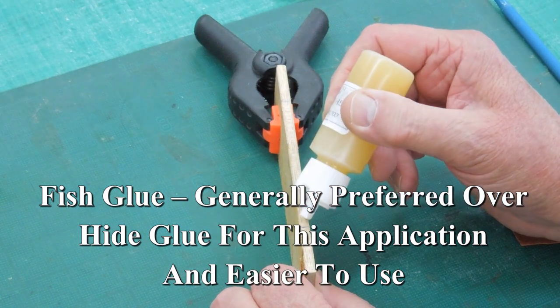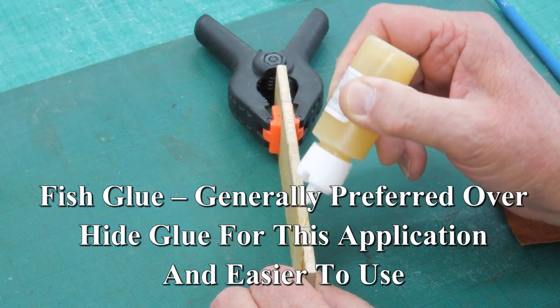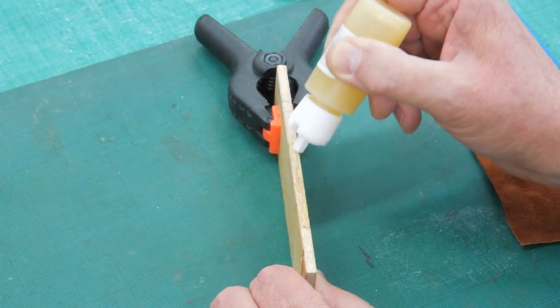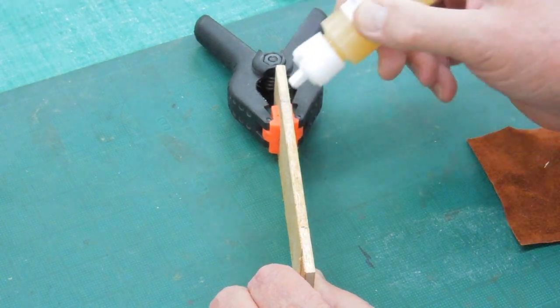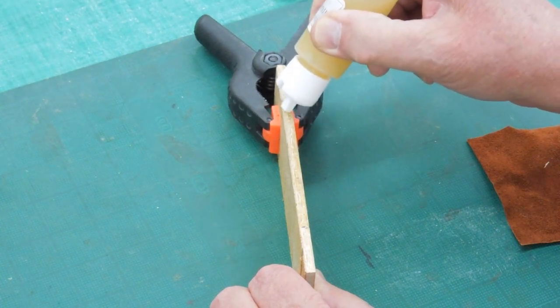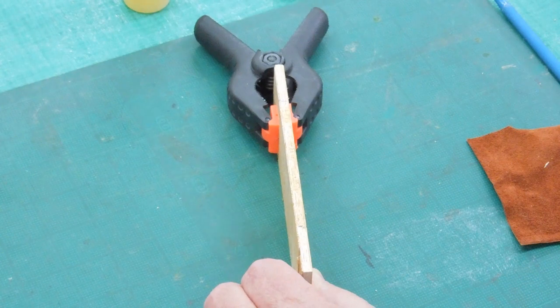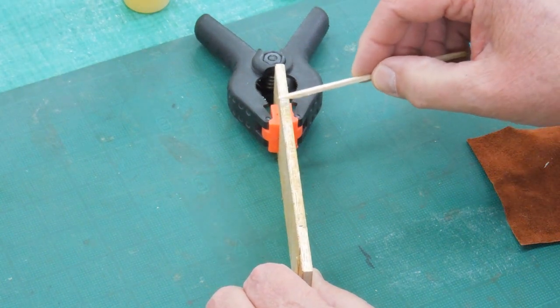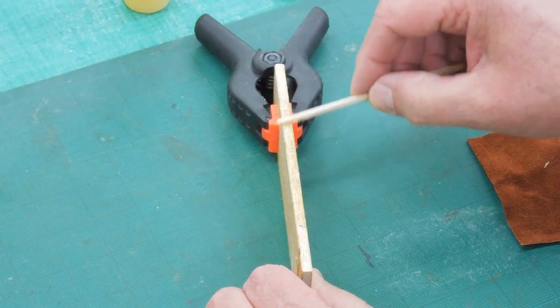For a strength test, I'm going to put a little fish glue on this piece of wood. This is a very cheap piece of plywood. I'm just going to glue in grain, if you will.